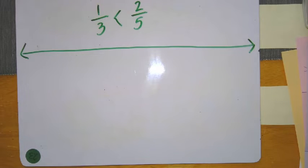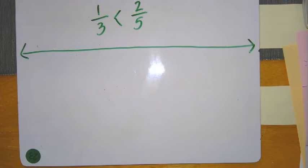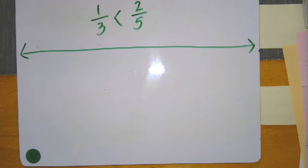Good morning. So yesterday I posed the problem: one-third is less than two-fifths. If that is my claim, I want to support it with some kind of proof, some kind of evidence — showing what you know and how you know it. There are a couple different ways to show whether or not you agree or disagree, true or false: one-third is or is not less than two-fifths.